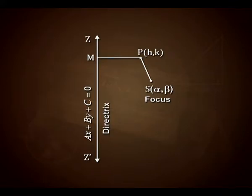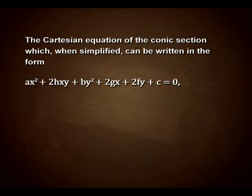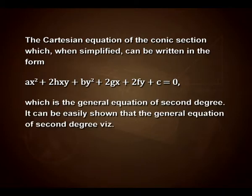Look into this figure here. We have a directrix represented by z z-dash, a focus represented by point S with coordinates alpha and beta, and a fixed point P denoted by (h, k). The Cartesian equation of the conic section, when simplified, can be written in the form Ax² + 2hxy + By² + 2gx + 2fy + c = 0, which is the general equation of second degree.